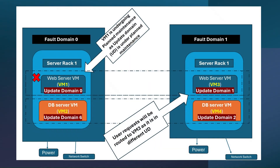From the diagram: if you have a web app running on an Azure VM, then Microsoft Azure will turn off VM 1, which is in update domain 0, for maintenance activity. When the next request comes from the client, Azure will send that request to another available VM in a different update domain.